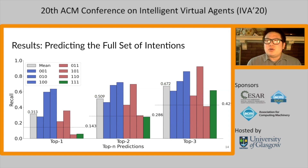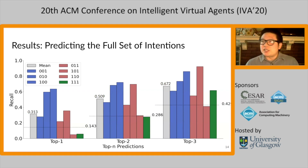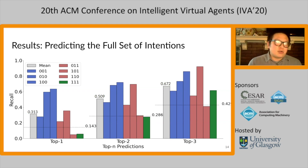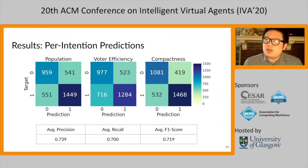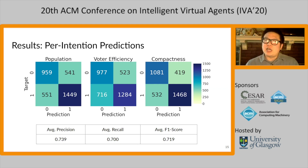It may be more useful to think about how the network performs in terms of individual intentions — asking how many times we correctly identified a trajectory with respect to a single design intention, making it a binary classification problem. For example, recall for '001' (maximizing only compactness) is below 30%, but over 92% of those false negatives were cases where the network predicted the human was trying to maximize compactness but also do something else. On average, at the level of individual intentions, the network had a precision of 0.739, a recall of 0.7, and an F-score of 0.719 — meaning when it predicted a human was designing for any one of the three intentions, it was correct about 73.9% of the time.